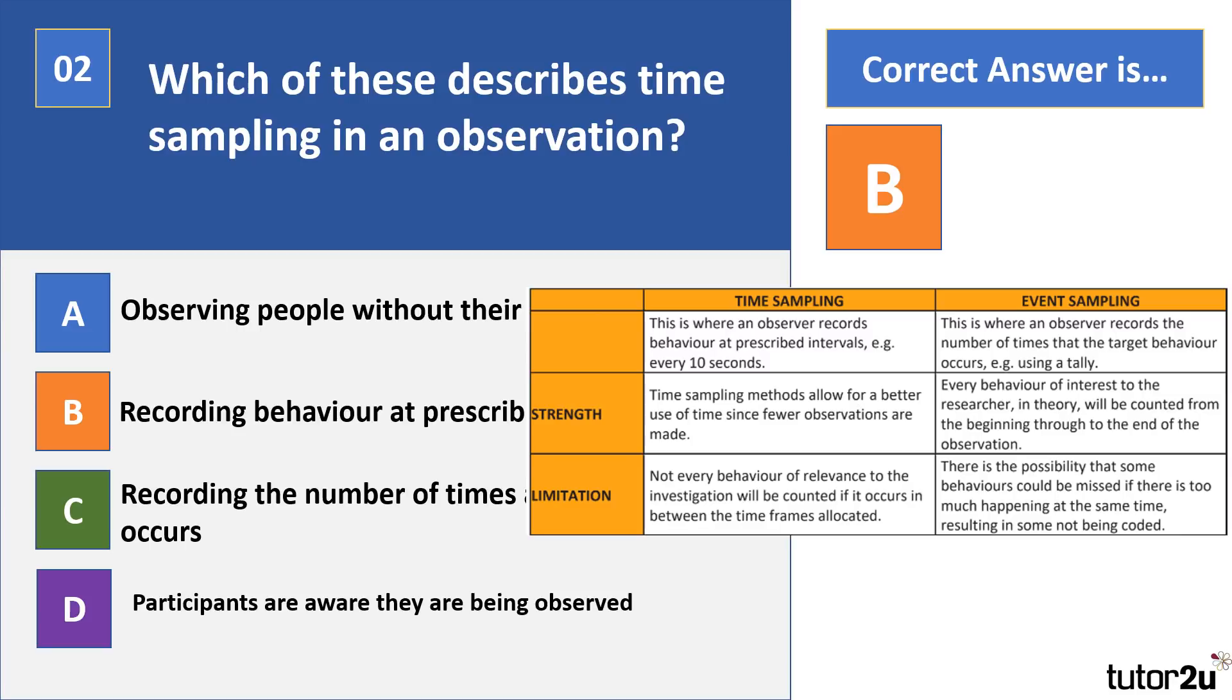What I've put on the slide here is just time sampling and also event sampling, which are the two that you tend to get confused. There's also some strengths and limitations on there. So time sampling is where behavior is recorded at prescribed time intervals, so kind of every 10 seconds, looking at what's happening, whereas event sampling you focus on a particular target behavior.